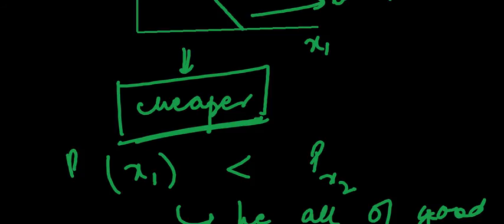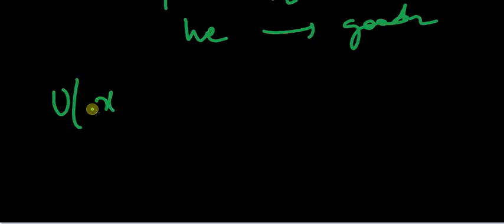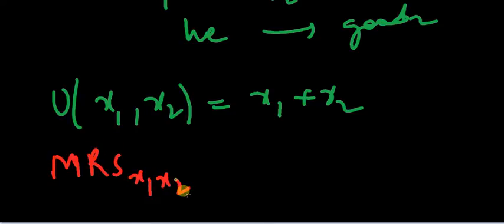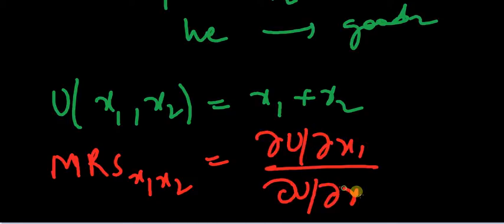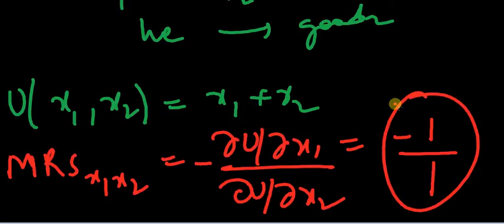Now let's find the slope. The utility function is x1 plus x2 and the slope is defined as MRS, given by ∂u/∂x1 divided by ∂u/∂x2. Differentiating with respect to x1 gives 1, and differentiating with respect to x2 gives 1, with a negative sign. So this slope is minus 1.